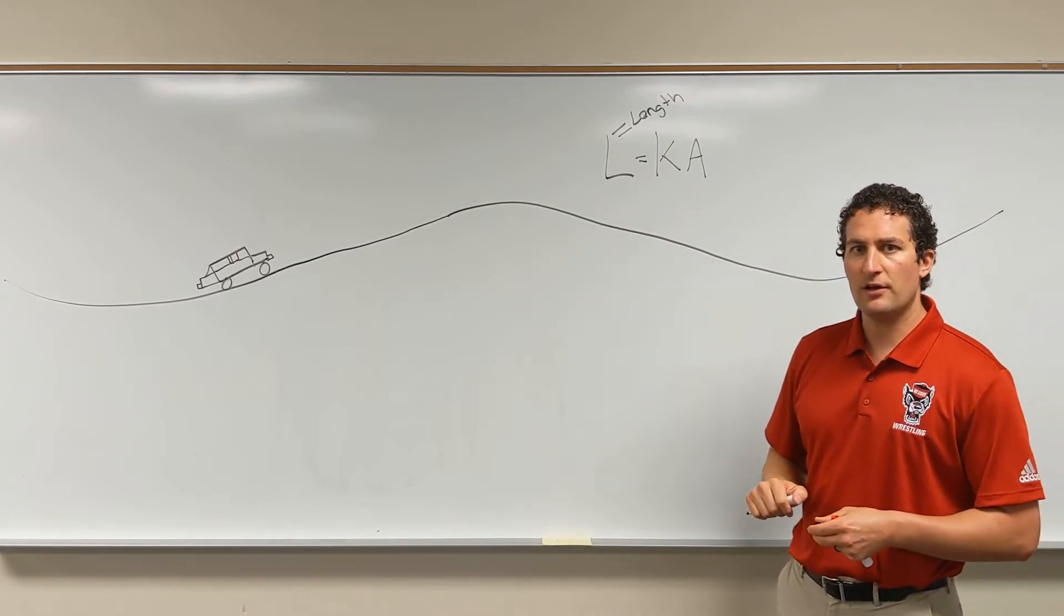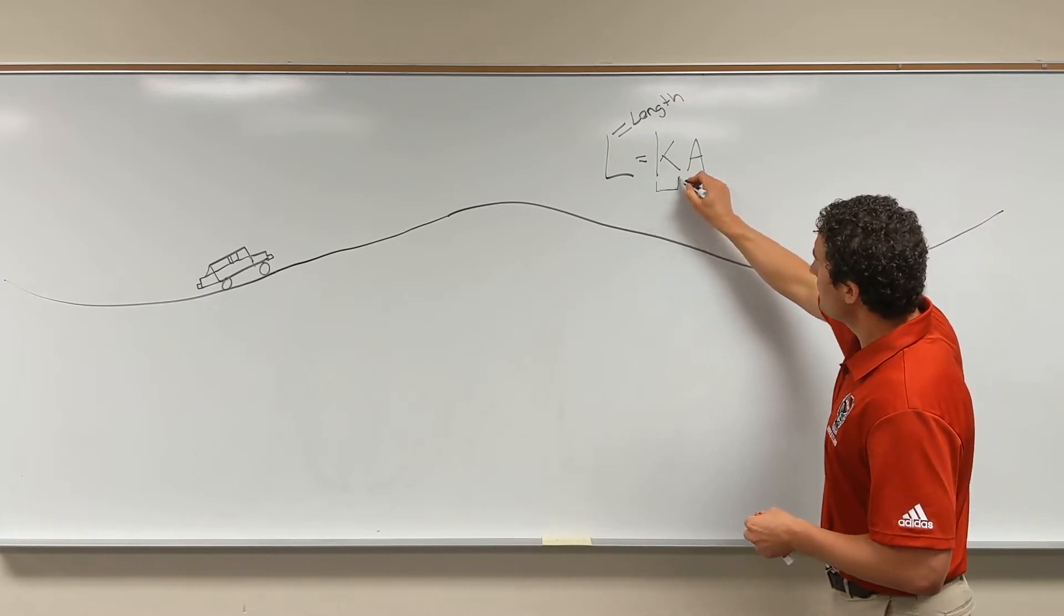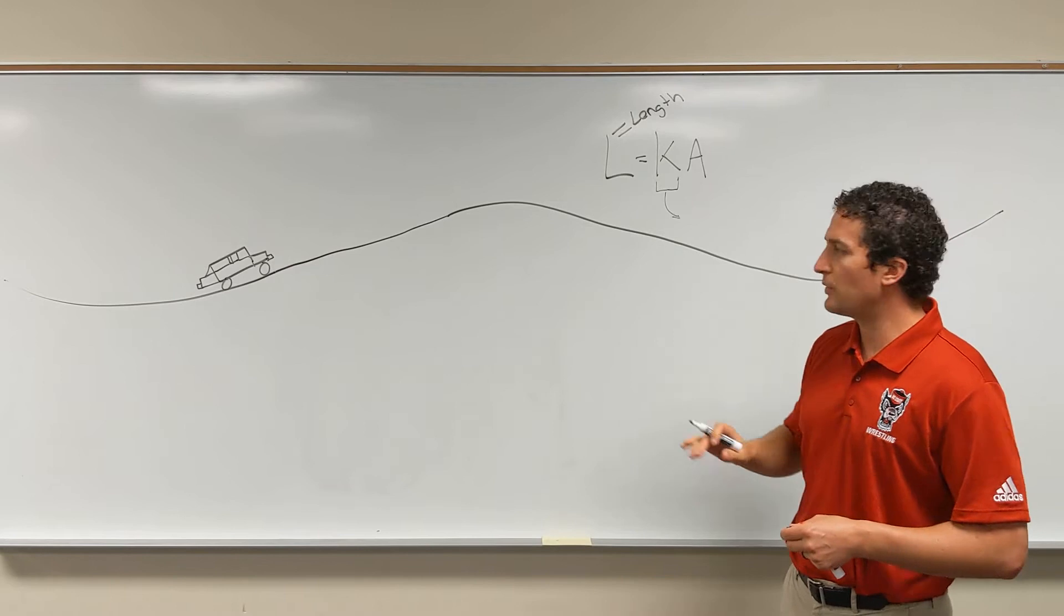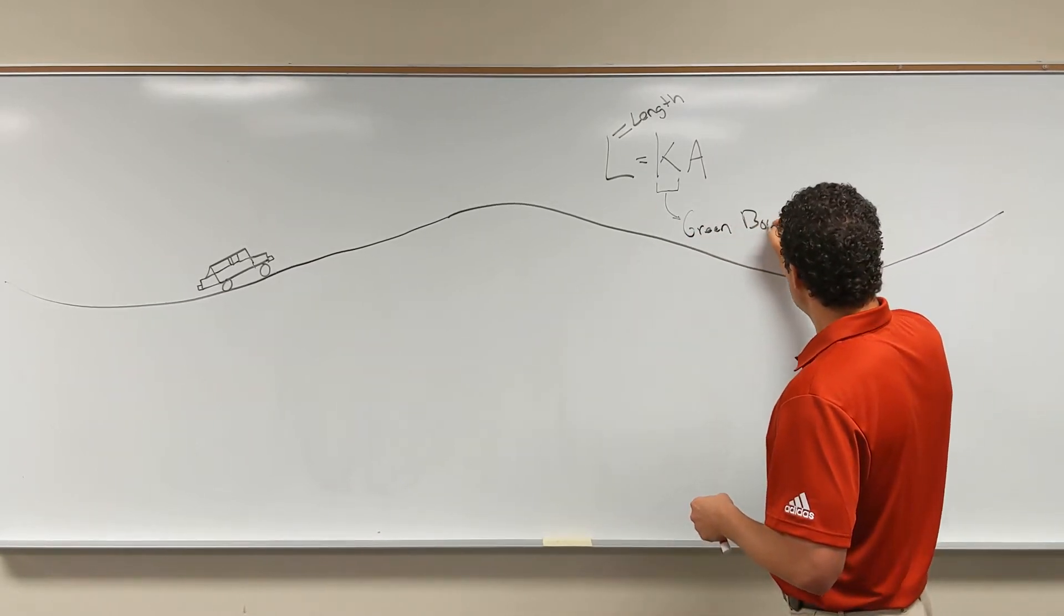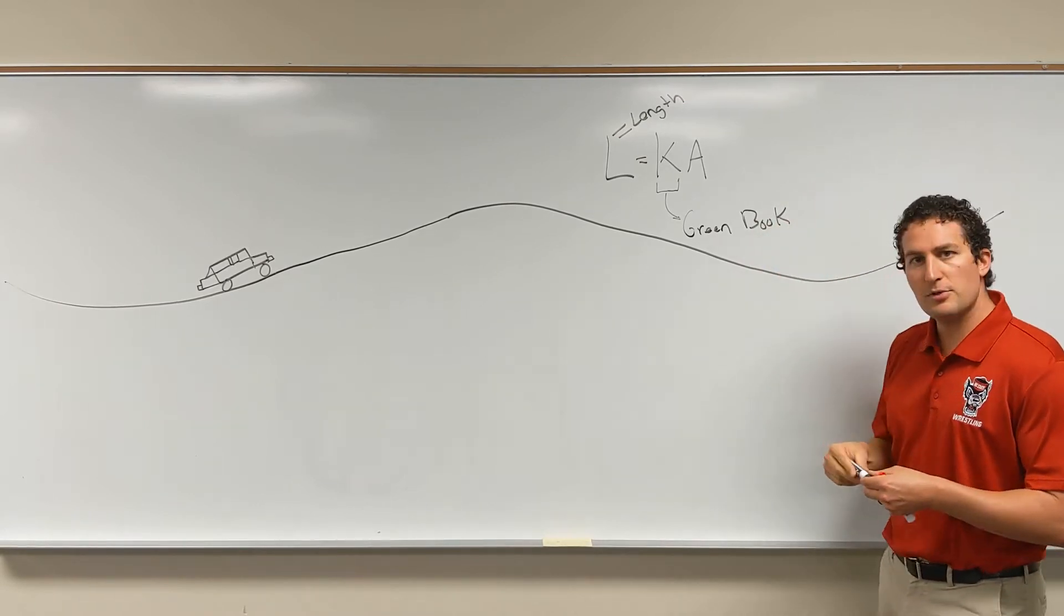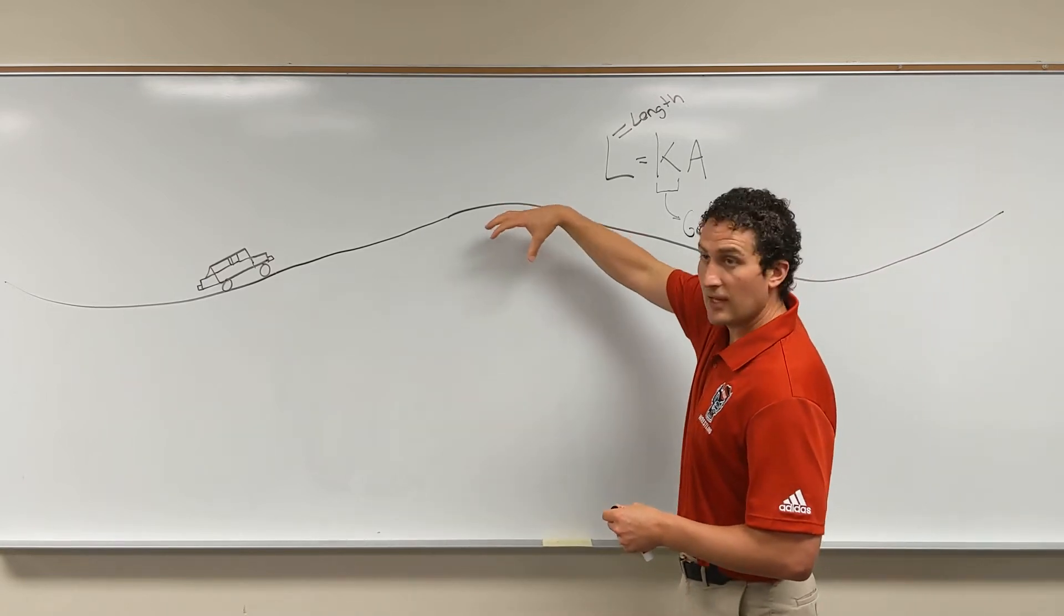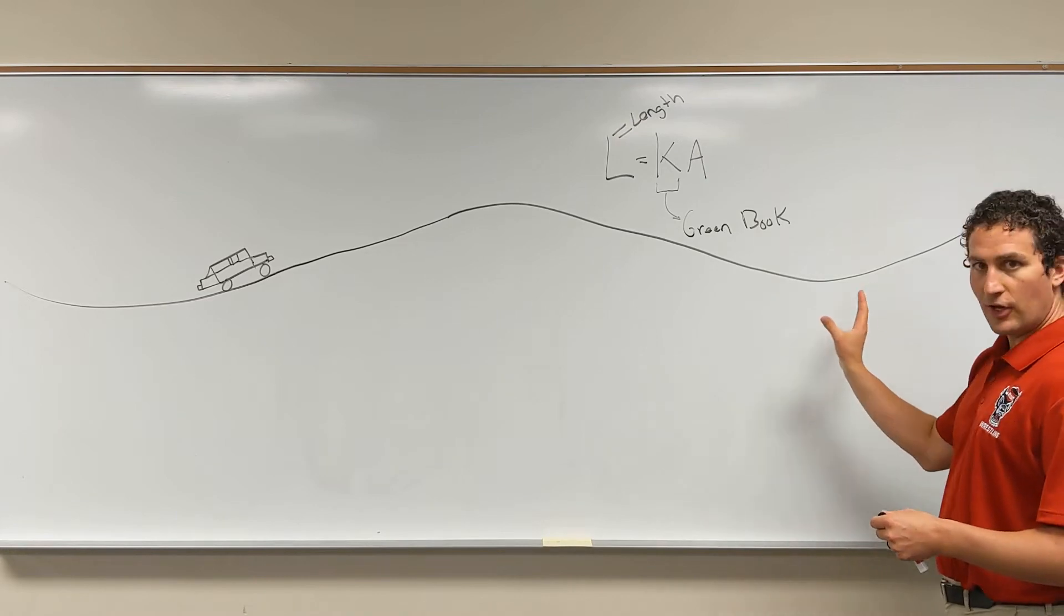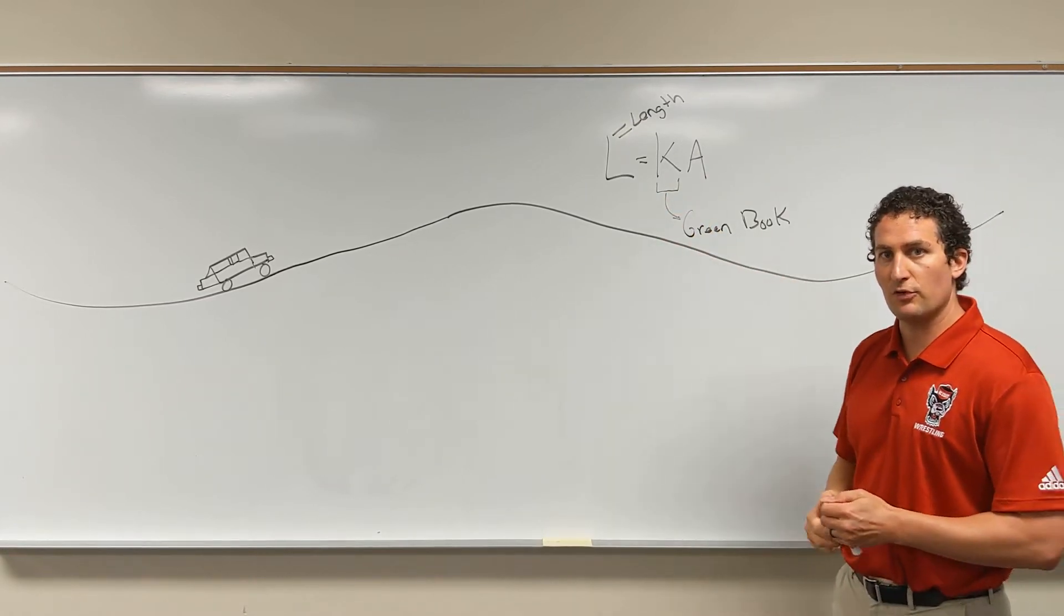K is the rate of vertical curvature, and this is going to come from the green book. Everything that we need for K value is from the AASHTO green book, and it's going to be specific to the type of curve. Whether we have a crest curve that has this concave down shape or a sag curve that has the concave up shape, we're going to get that K value.